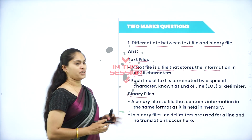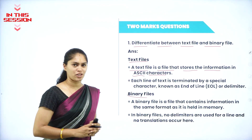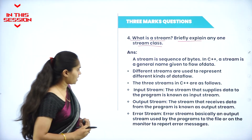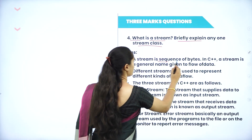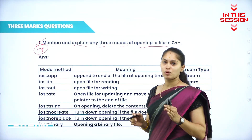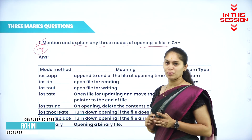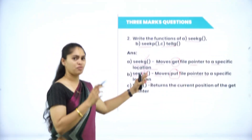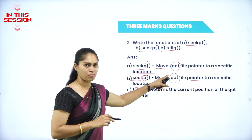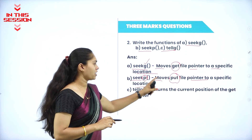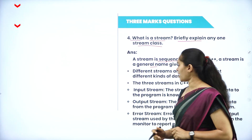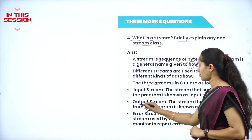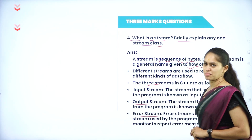Data and information of a text file is stored in the format of ASCII character stream, which is a sequence of bytes. Methods of opening a file are using a constructor and using the open member function. Modes include seekg for moving a get file pointer and seekp for moving a put file pointer. C++ has three types of streams: input stream, output stream, and error stream.